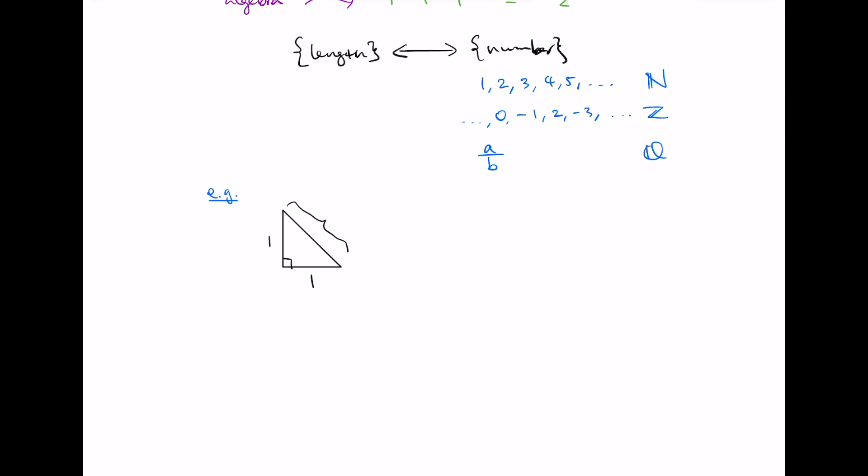So if we call this length some unknown number x, then Pythagoras' theorem tells us that x squared is equal to 1 squared plus 1 squared, which is 2. Now here's the bold claim, which is that x is not of the form a divided by b for any choice of a and b natural numbers.